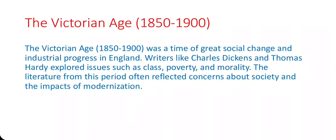Following the Romantics, we enter the Victorian Age from 1850 to 1900, which was a time of great social change. The literature of this era often explores the struggles of the individual against society. Novelists like Charles Dickens and Thomas Hardy dominated this period. Dickens' Great Expectations and Hardy's Tess of the d'Urbervilles are perfect examples of Victorian literature. Victorian literature focused on social issues and moral dilemmas.